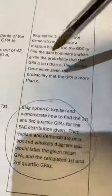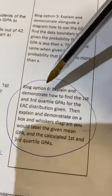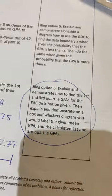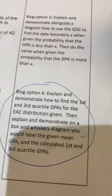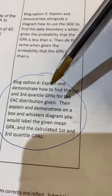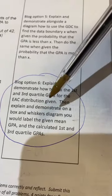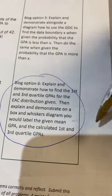Alright, so my chosen blog option was blog option number six, which explains and demonstrates how to find the first and third quartile GPAs for the EAC distribution given. Then I'll explain and demonstrate on a box and whiskers diagram where you will label the given values.